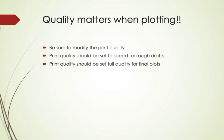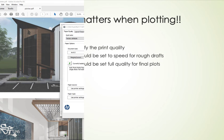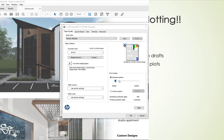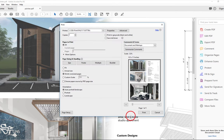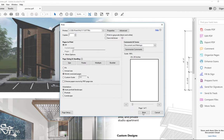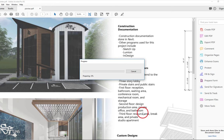Quality matters when plotting. Please be sure to modify the print quality. Print quality should be set to speed for rough drafts and set to full quality for final plots. In the print property box, there is the print quality option. Slide it to the right in order to set it to quality, then hit OK.